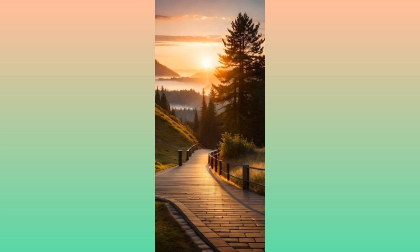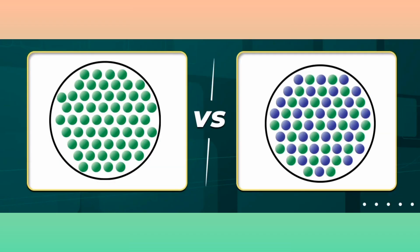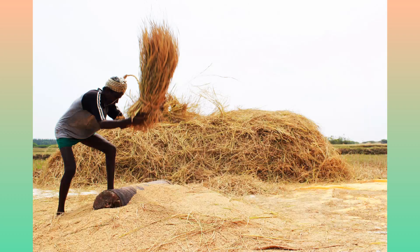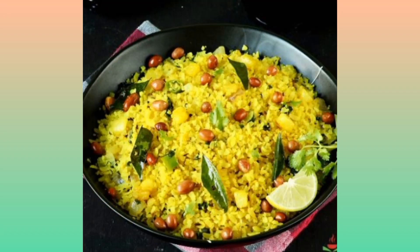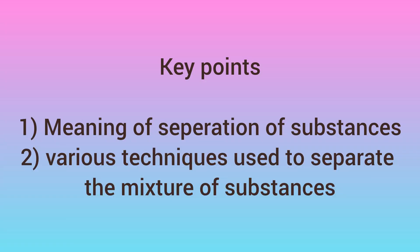As we all know that in our daily life, there are many instances when we notice a substance being separated from a mixture of materials. Tea leaves are separated from the liquid with a strainer. Grain is separated from stalks while harvesting. Perhaps you might have eaten salted poha; if you found that it had chillies in it, you may have carefully taken them out before eating. In today's class, let us study about what is the meaning of separation of substances and what all the techniques are used to separate the mixture of substances.